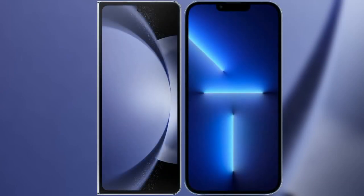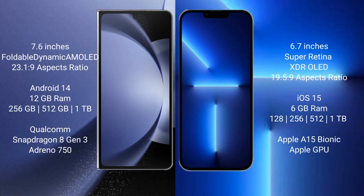I will compare the new Samsung Galaxy Z Fold 6 with iPhone 13 Pro Max. Samsung Galaxy Z Fold 6 comes with a 7.6-inch foldable dynamic AMOLED display and 6.7 inches at 23:19 aspect ratio. iPhone 13 Pro Max has a 7-inch Super Retina XDR OLED display and 6.7 inches at 19.5:9 aspect ratio.